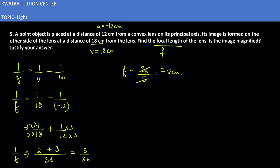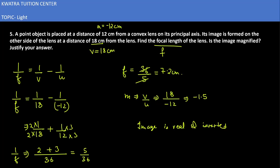Now we have to find the magnification, because we need to check if the image is magnified. For a lens, m equals v over u. With v equal to positive 18 and u equal to minus 12, the magnification is minus 1.5. The negative sign indicates that the image is real and inverted. That is the answer for question number 5. Now moving to question number 6.